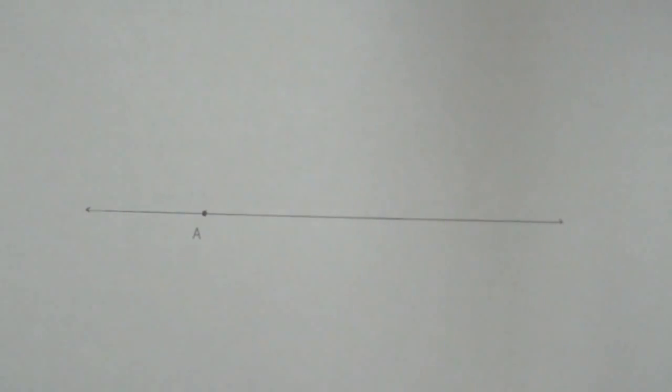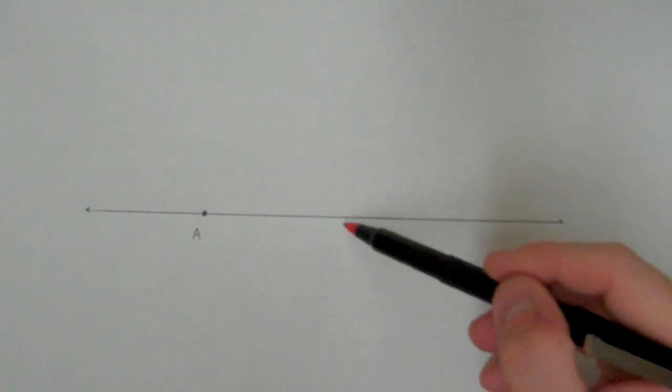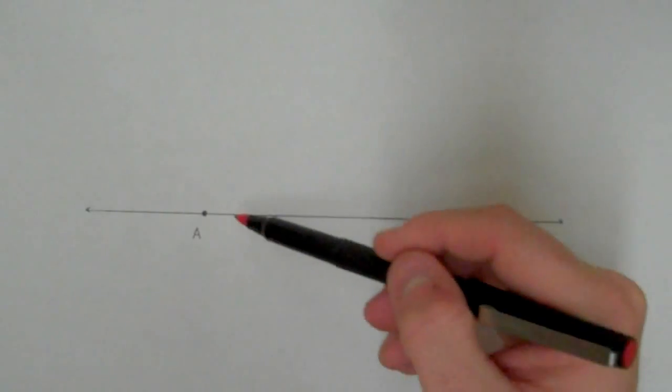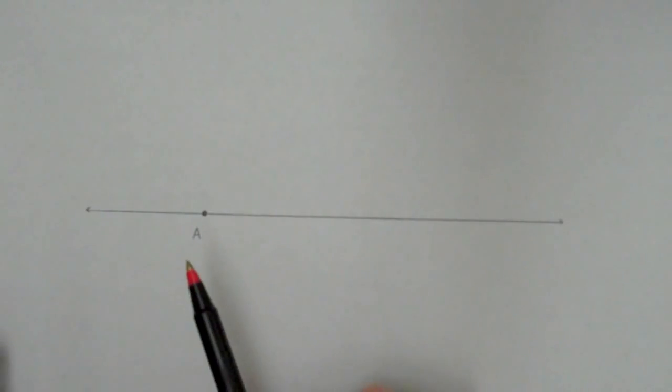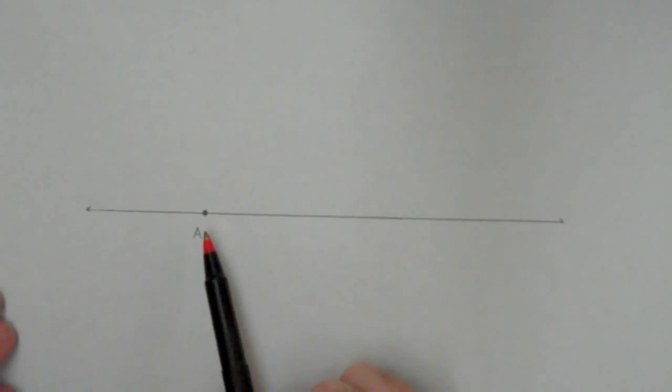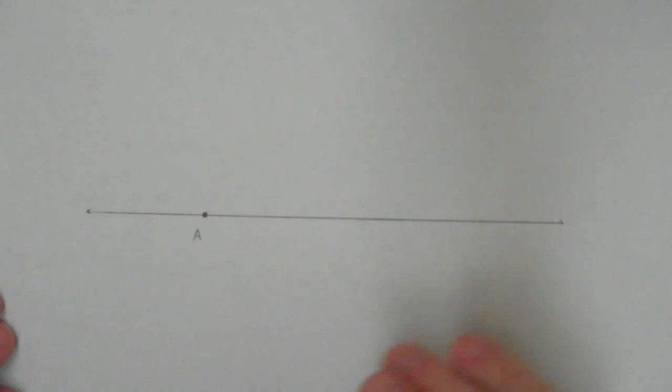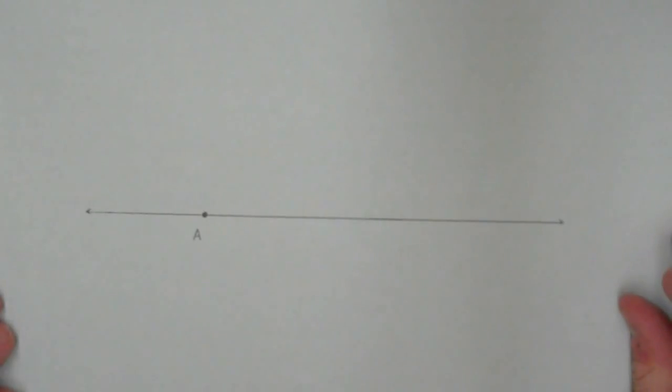This is the construction for a perpendicular line to a given line and through a point on that line. I want to use what I know about constructing a perpendicular bisector to do this construction. And in order to do that, I need to create a segment such that A is the midpoint of that segment.